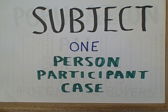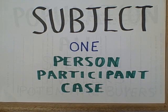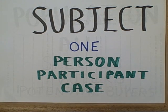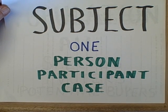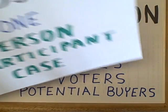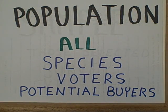Let's start with the word subject. Here we're talking about one individual case that we are looking at — one person or one animal being studied, one participant in our experiment or survey, one patient being analyzed in a case study. So subject is one person or one animal, one case being looked at. We don't use the word subject to describe a topic; usually the topic of our investigation is some variable.